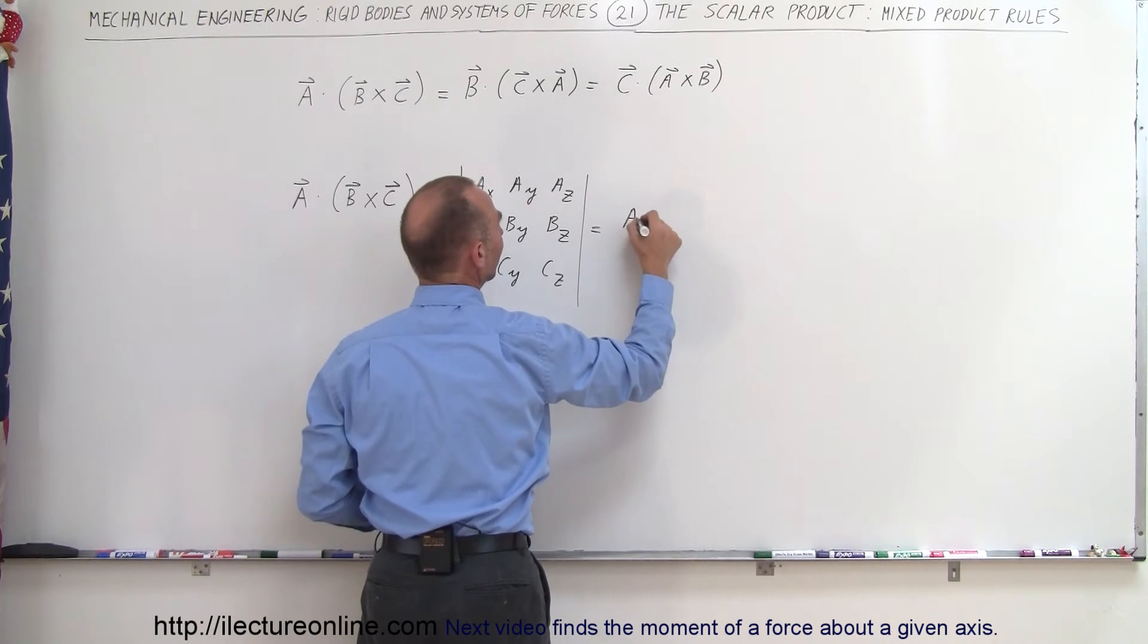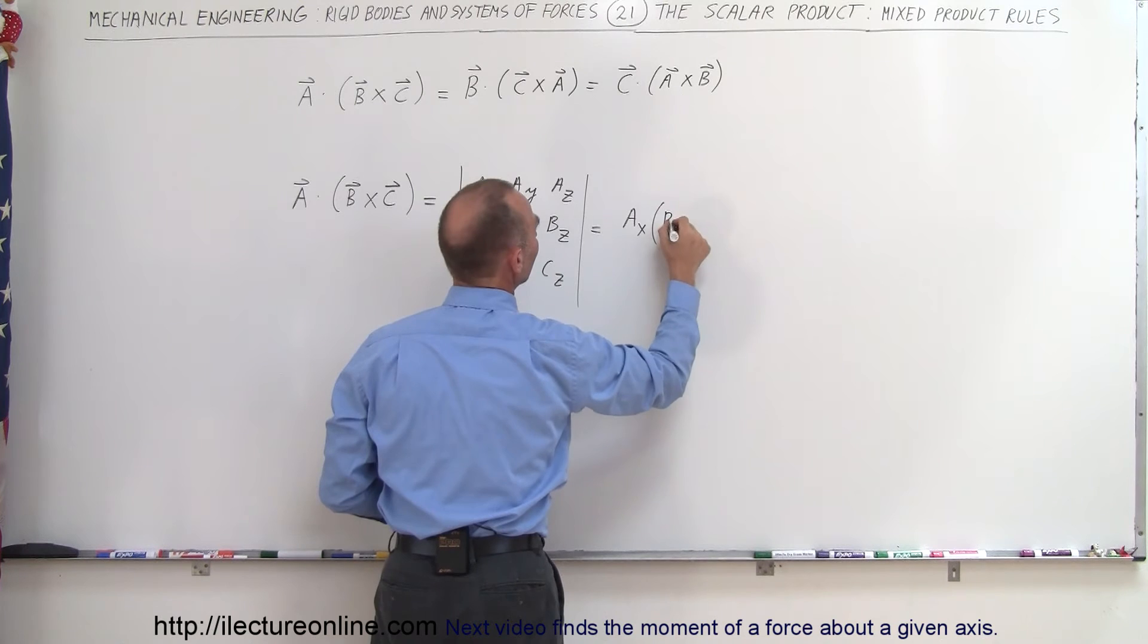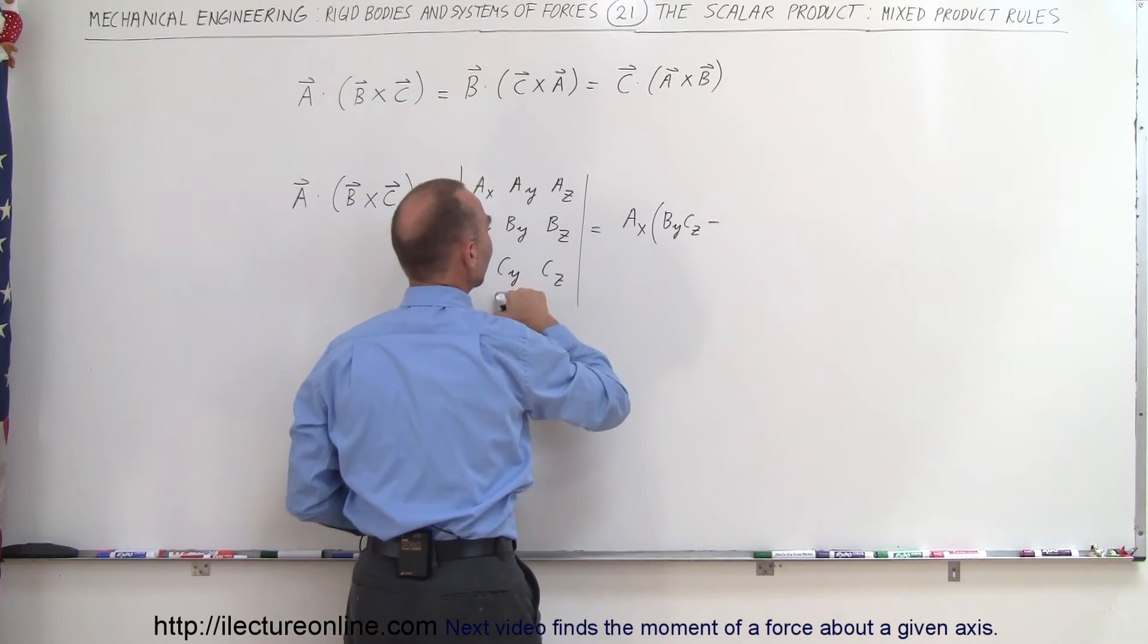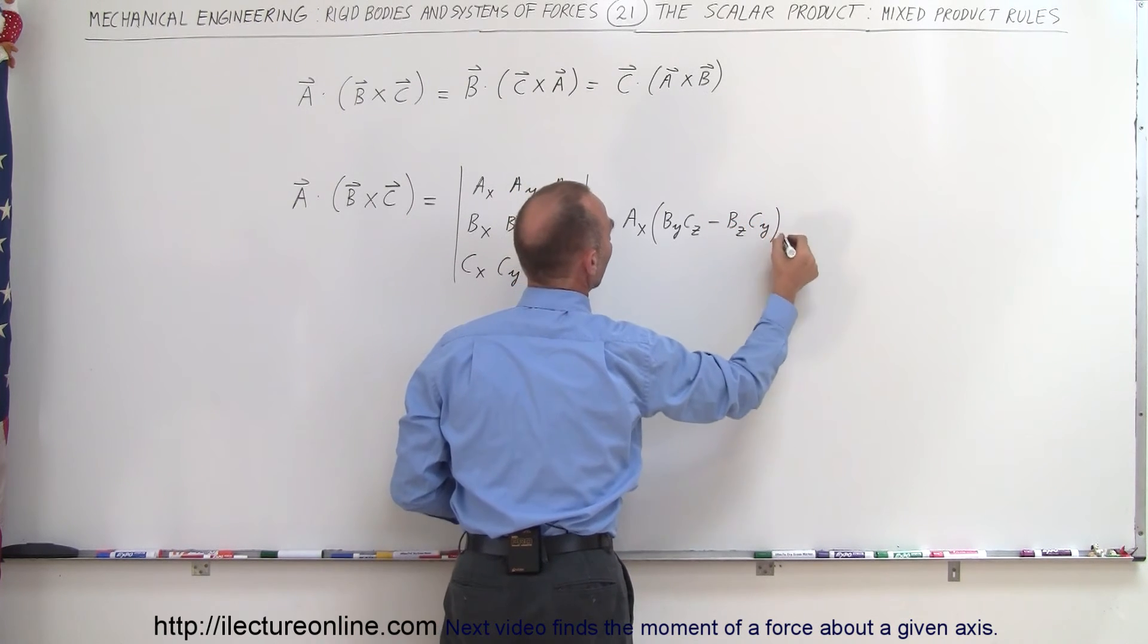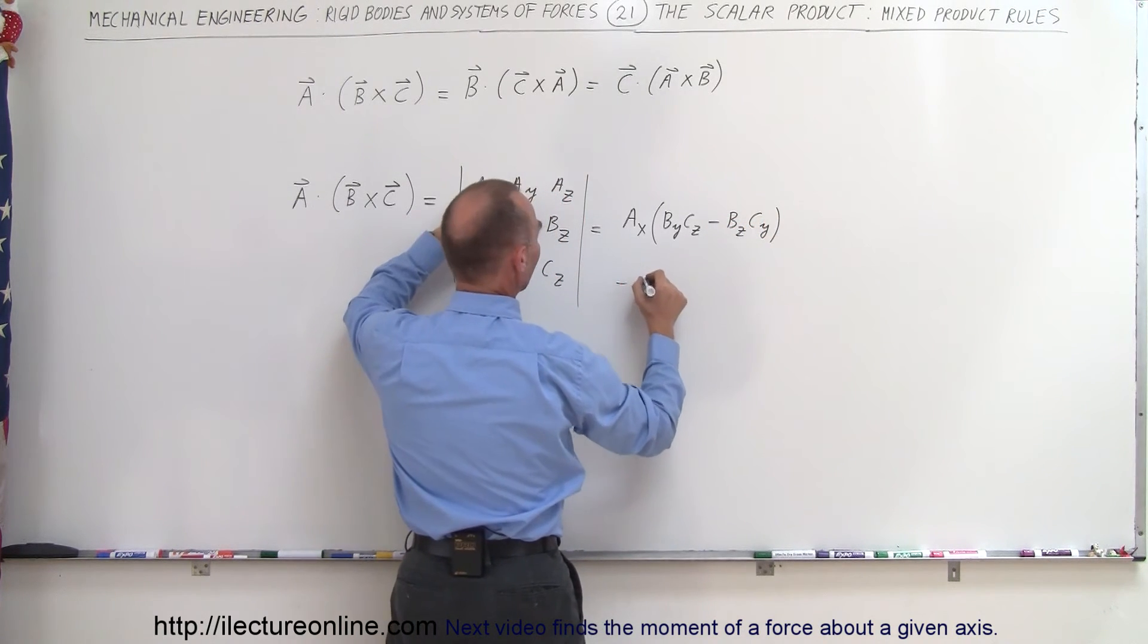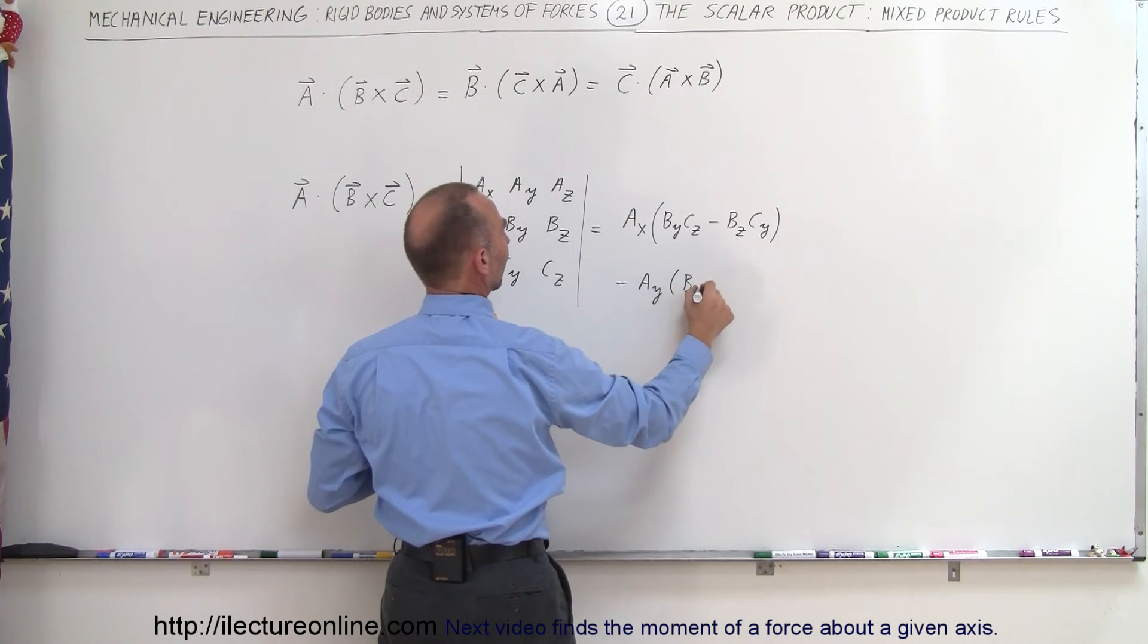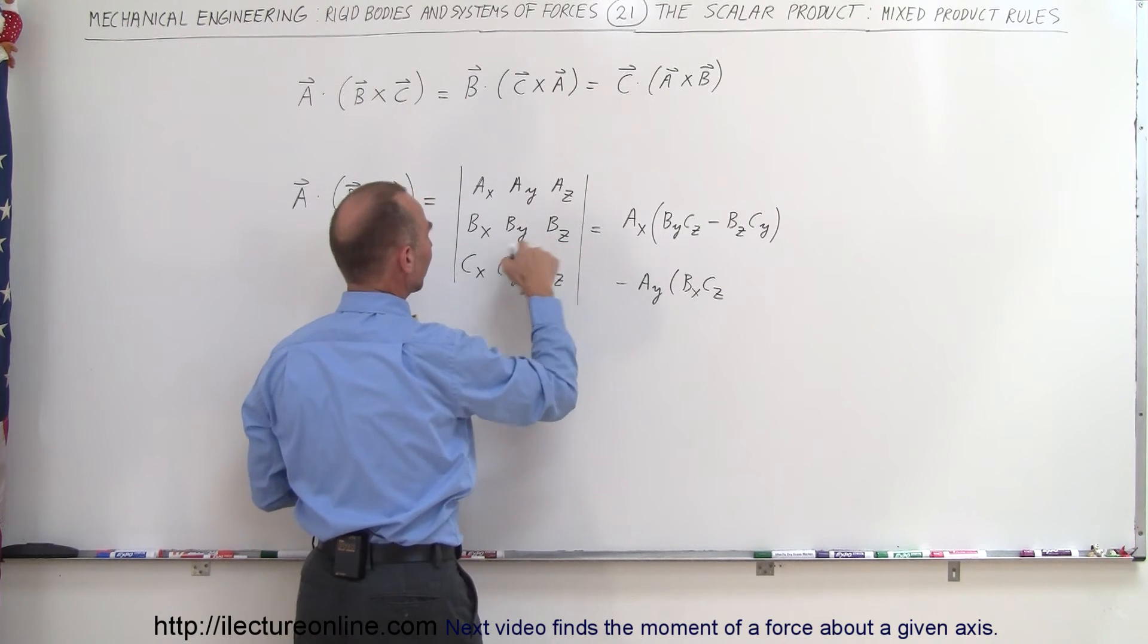You get A sub X times B sub Y times C sub Z, B sub Y times C sub Z minus B sub Z C sub Y. And then you get minus A sub Y times B sub Z times C sub Z because then you multiply this times this minus this times this.